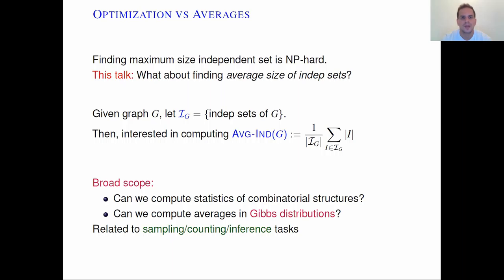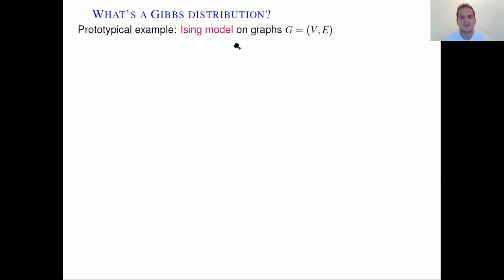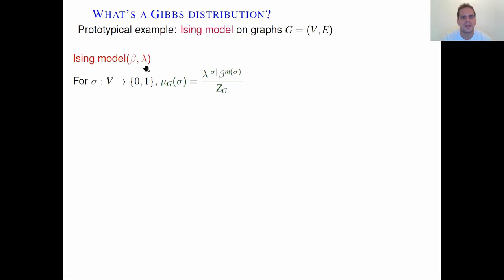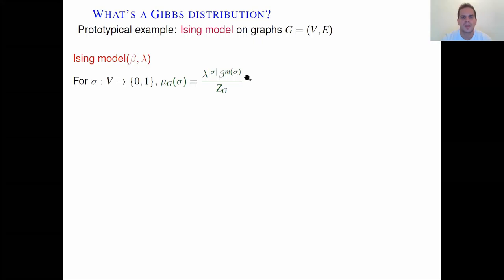So what's a Gibbs distribution? The prototypical example is the Ising model, which is a two-spin model. The model has two parameters, beta and lambda. Beta is an edge activity, and lambda is a vertex activity, known also as the external field of the model. Configurations of the model are all 0-1 spin assignments to the vertices of a graph G, and the weight of a configuration sigma is lambda raised to the number of vertices with spin 1 under sigma, times beta raised to the number of monochromatic edges under sigma. The normalizing factor of this distribution is known as the partition function.